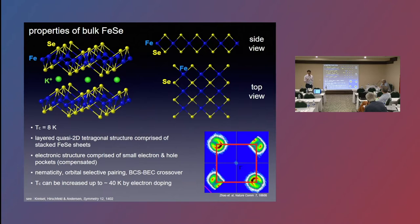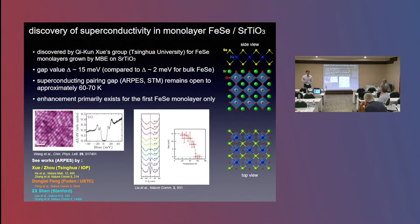This work was really motivated by work by Chi-Quin Shi's group at Tsinghua University, where they first discovered that if you synthesized a single monolayer of iron selenide grown epitaxially using MBE onto strontium titanate substrates, that you would see a very enhanced superconducting gap of about 15 MeV compared to about 2 MeV in bulk.